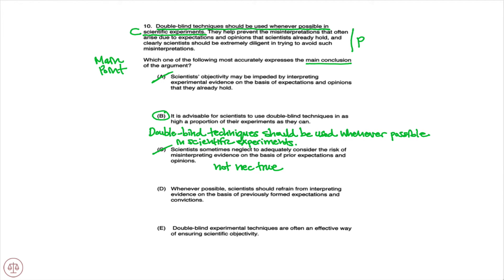D is obviously true from the last sentence, where it says scientists should be extremely diligent in trying to avoid such misinterpretations. So whenever possible, scientists should refrain from interpreting evidence on the basis of previously formed expectations and convictions — but again, not the main point, so D is out. And E: double-blind experimental techniques are often an effective way of ensuring scientific objectivity. That is true, but not the main point, so E would be eliminated.